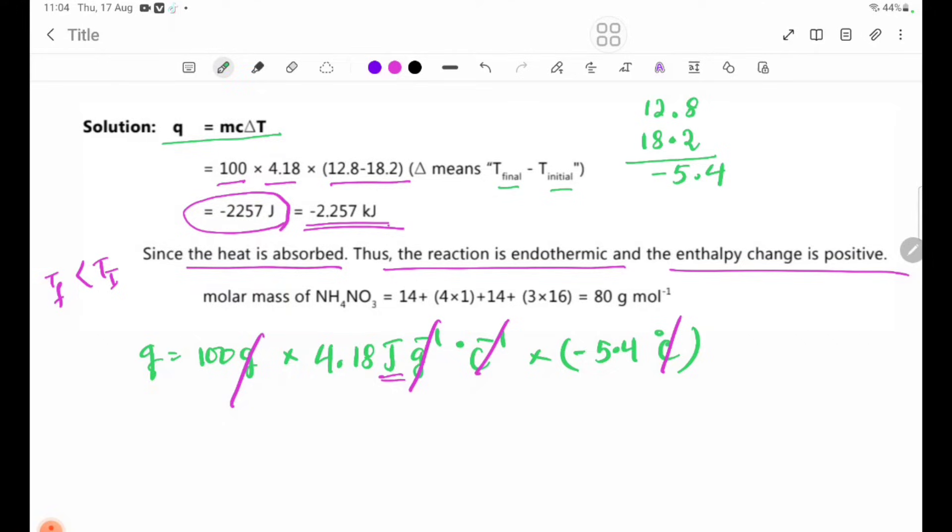The molar mass of NH4NO3 is 80 grams per mole. Delta H solution equals Q divided by n.